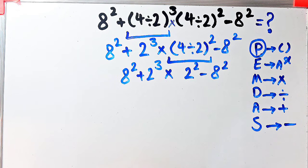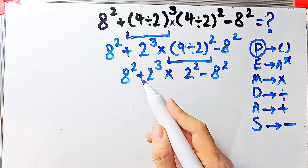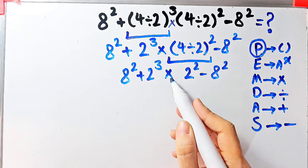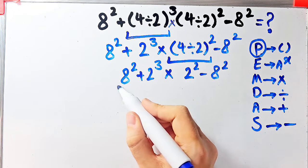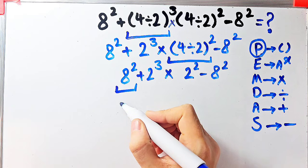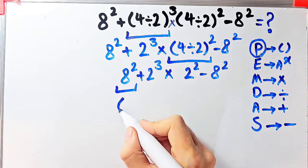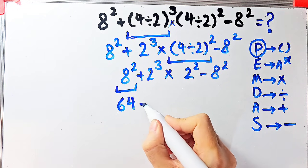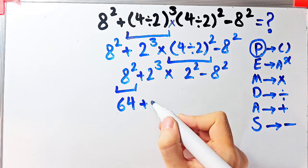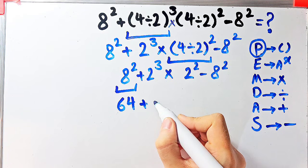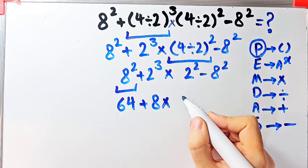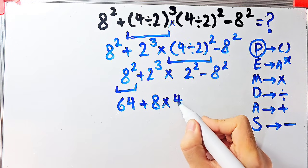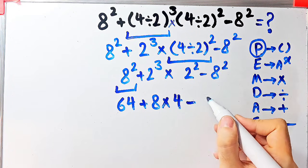Now we have exponent, addition, multiplication, and subtraction. In this step we simplify the exponents. Eight to the power of two equals sixty-four. Now we have sixty-four plus two to the power of three, then times two to the power of two, which equals four, minus eight to the power of two, which equals sixty-four.